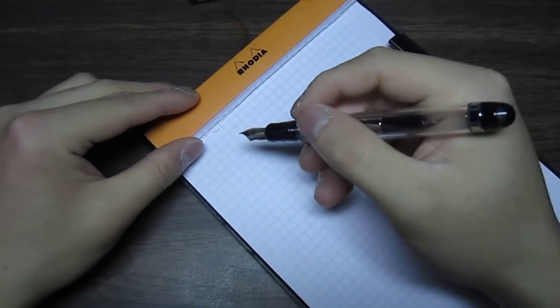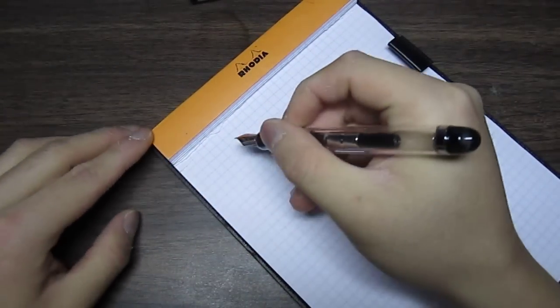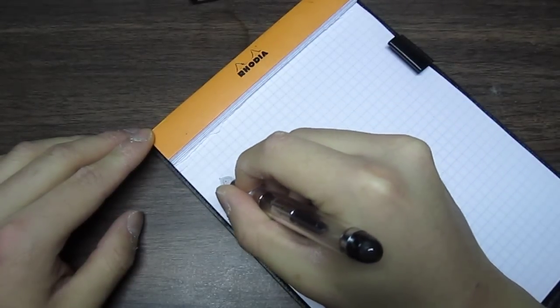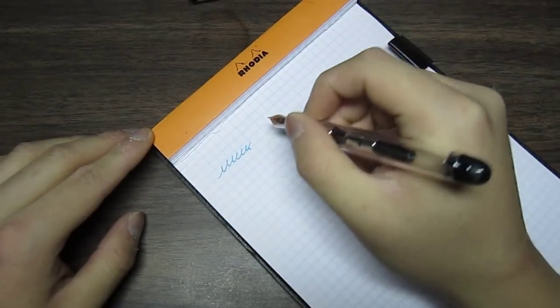And if I get a piece of paper, you can see that when you have that sort of alignment with the nib facing upwards, the pen writes very smoothly.